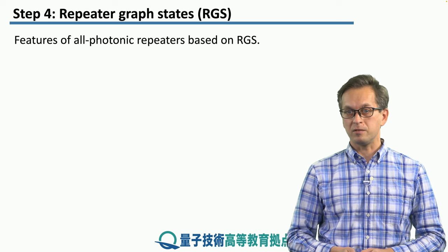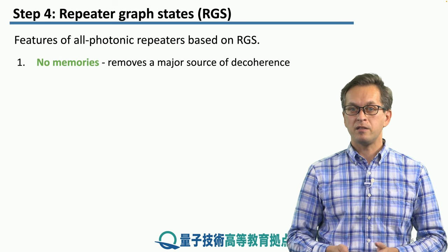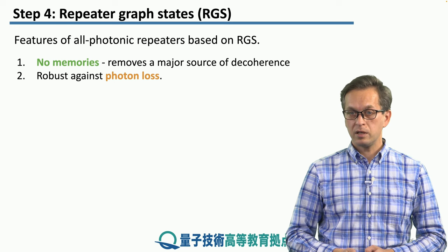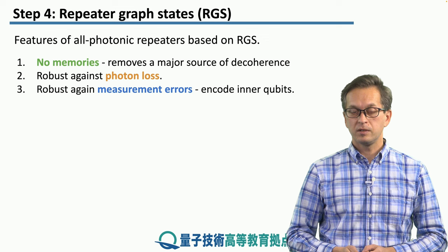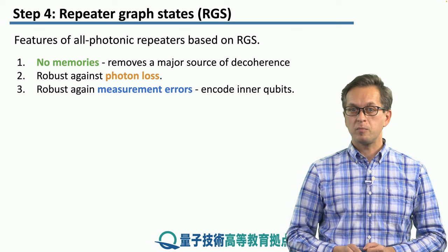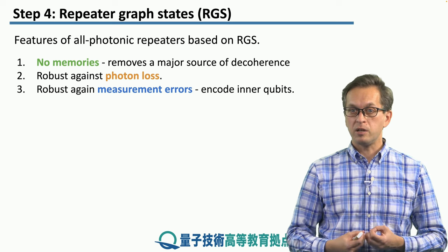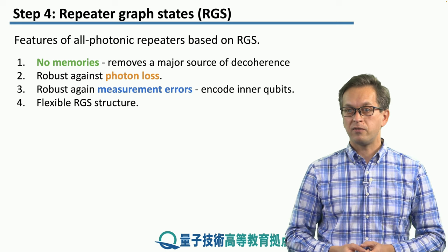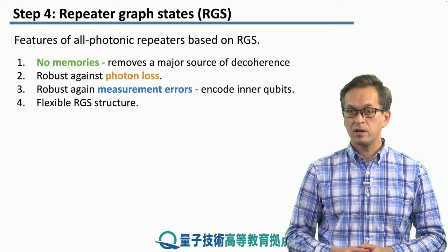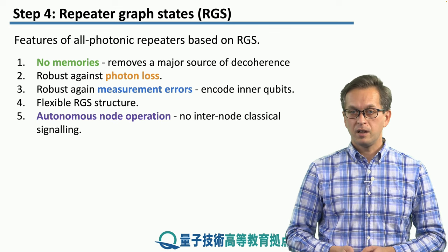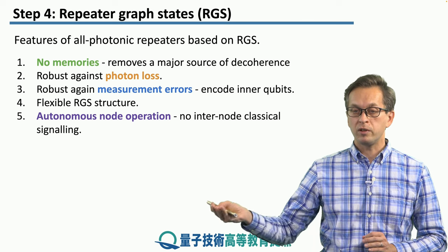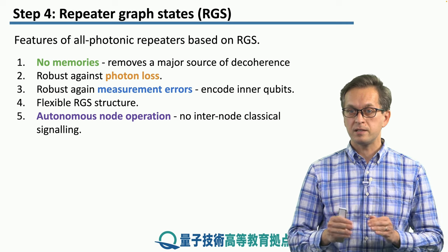Here are some features of all-photonic repeaters based on repeater graph states. Number one, as we said, there are no memories, which removes a major source of decoherence. They can be made robust against photon loss just by changing the structure of the RGS. They can also be made robust against measurement errors — the inner qubits can be encoded and made robust against Z basis measurement errors. The RGS has a very flexible structure: depending on link properties, we can increase or decrease the number of qubits in an RGS, changing its robustness. An important property is that the measurement nodes operate autonomously — they don't need any information from neighbors or from nodes further down the connection. All they have to do is alternate their measurements between the Bell basis and the Pauli basis.